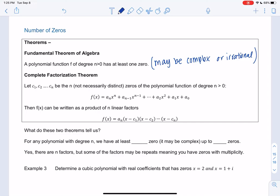And then the complete factorization theorem tells us that if we find all the 0s, there could be n of them, but they might all be the same. So not distinct means they might be repeats. And that goes back to the multiplicity. But there should be n of them, n factors, but we might have repeats. And so we can always rewrite it as a product of n factors. Again, these might be complex or irrational, so it's not going to be the traditional factoring that we're used to, but we're always able to do this.